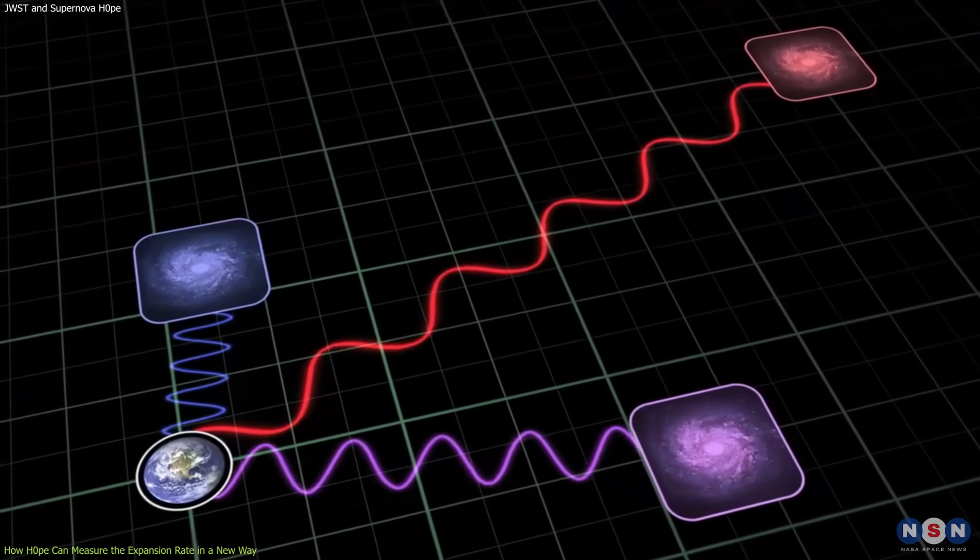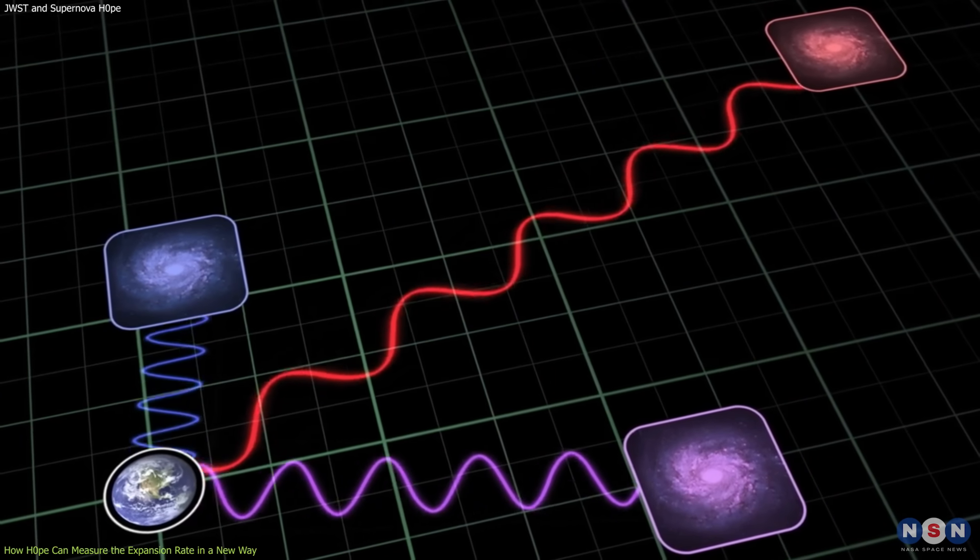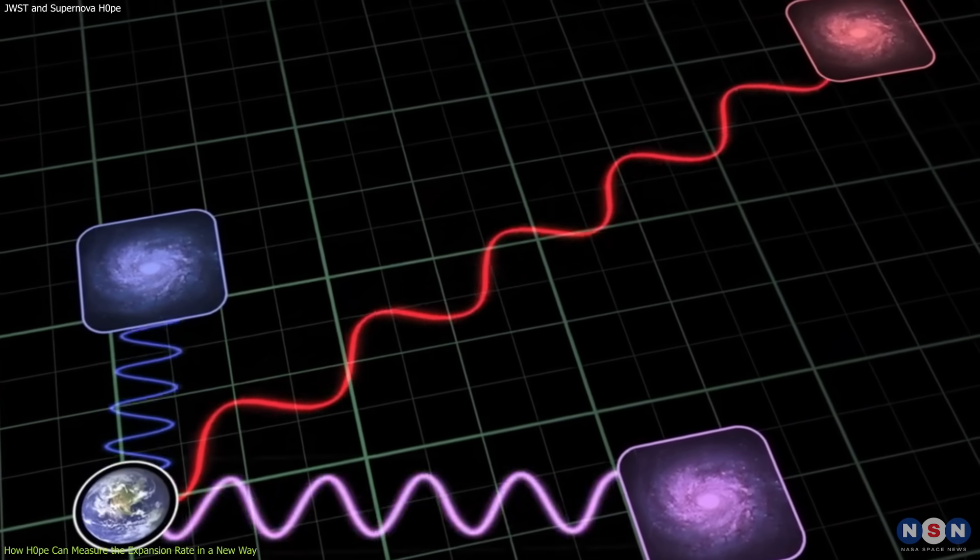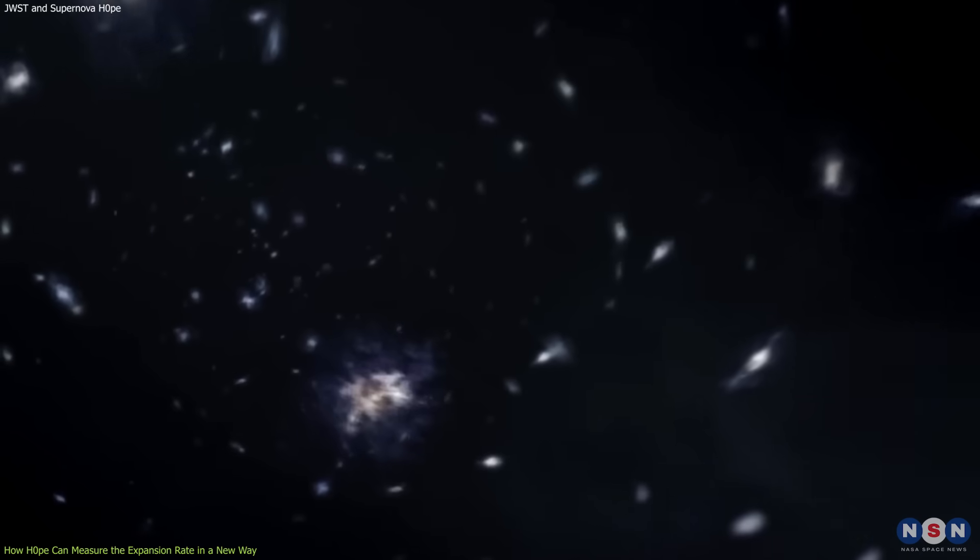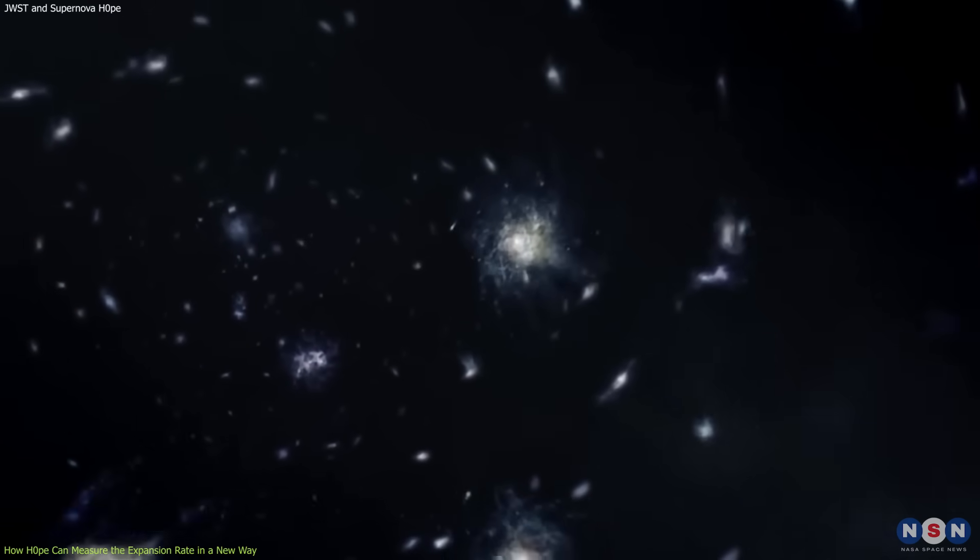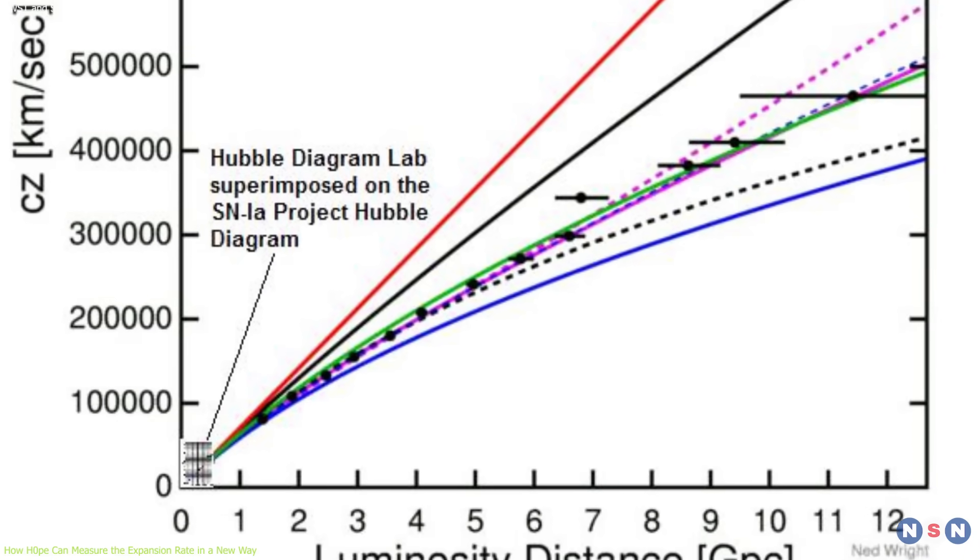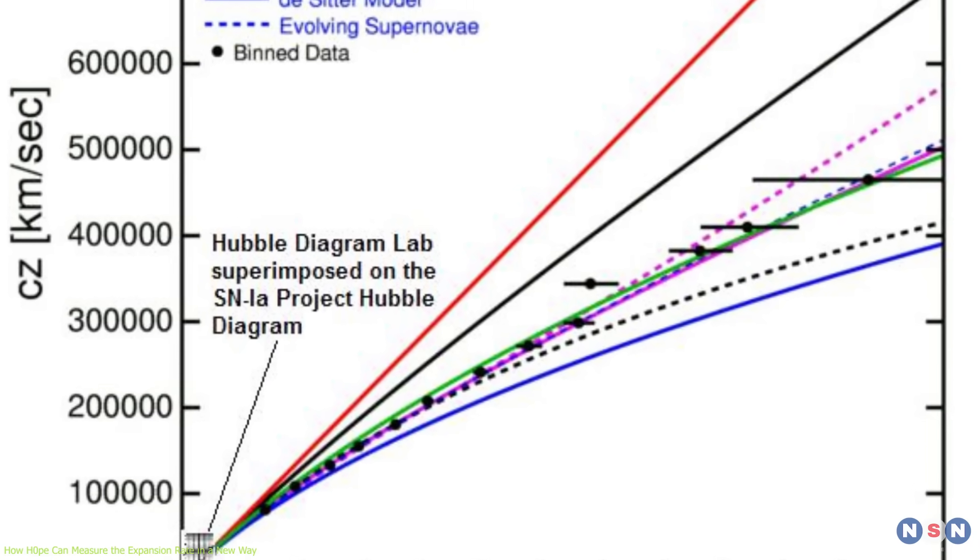And by measuring their redshift, which is the amount by which their light is stretched or shifted towards the red end of the spectrum due to their motion away from us, we can estimate their speed from us. By combining these two measurements, we can apply Hubble's law and calculate H0.